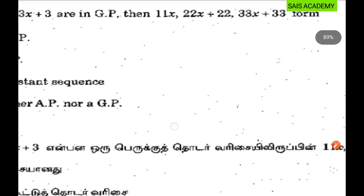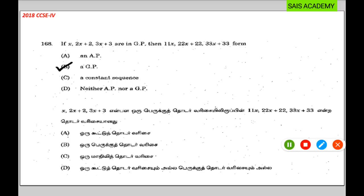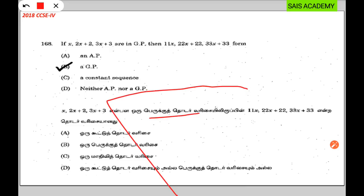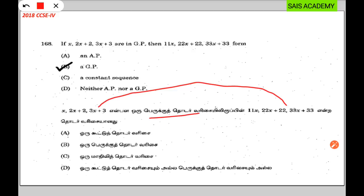What is average? If you have a 1st order, you can get a 1st order and you can get a 1st order. Then you can get a 2nd order. Now what do you do? If you have a 2nd order, you can get a 2nd order. Now, the first one is x, 2x plus 2, 3x plus 3. You can get a 1st order and you can get a 2nd order.